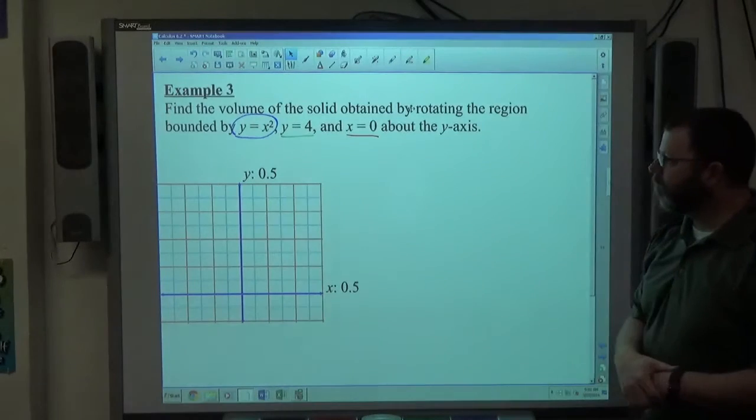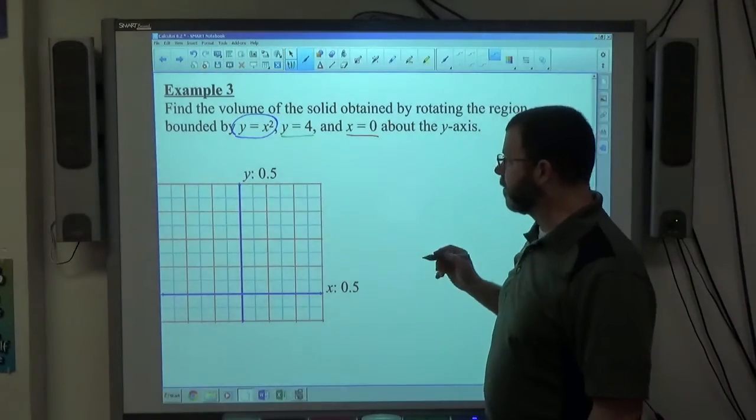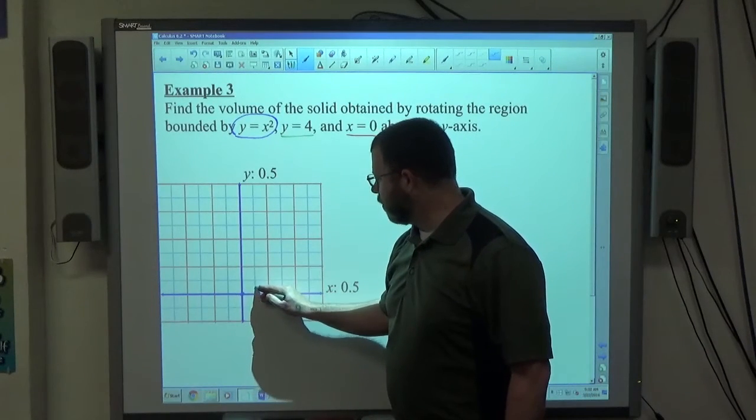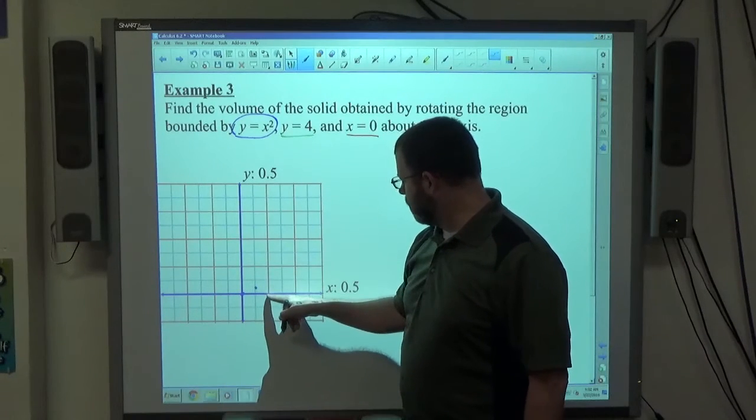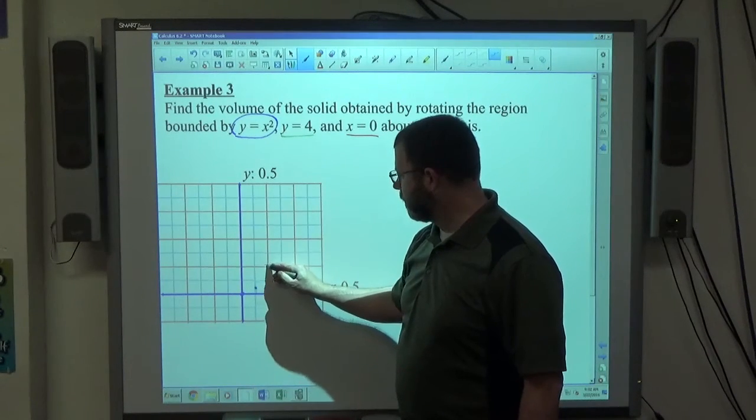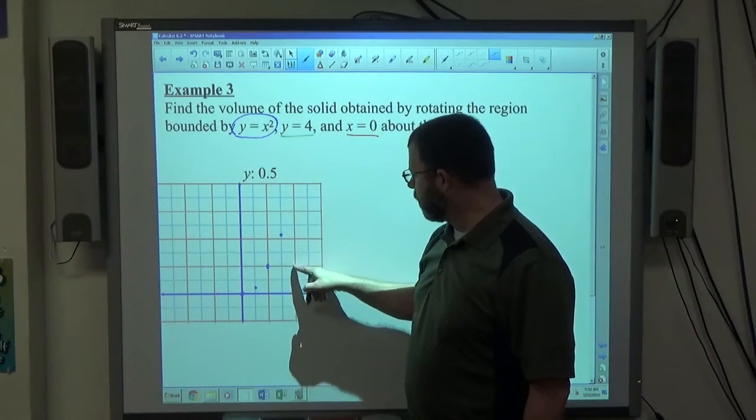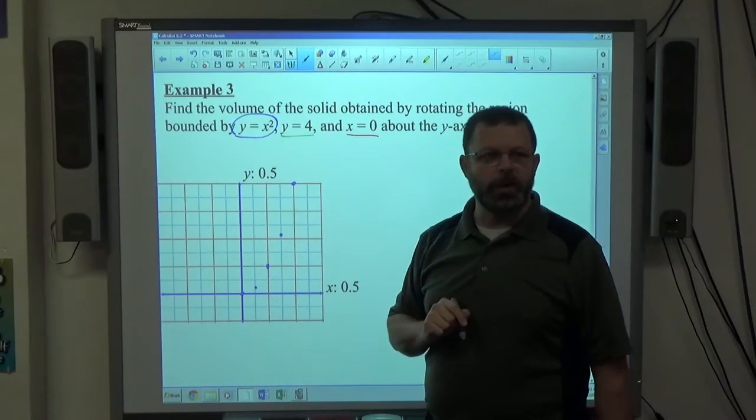Start off with y equals x squared. If I just were to graph that, if I square what x is, 0 squared is 0, 0.5 squared is 0.25, using a 0.5 scale on the x and the y axis. 1 squared is 1, 1.5 squared is 2.25, 2 squared is 4, and I'm assuming that's as far as we need to go there.